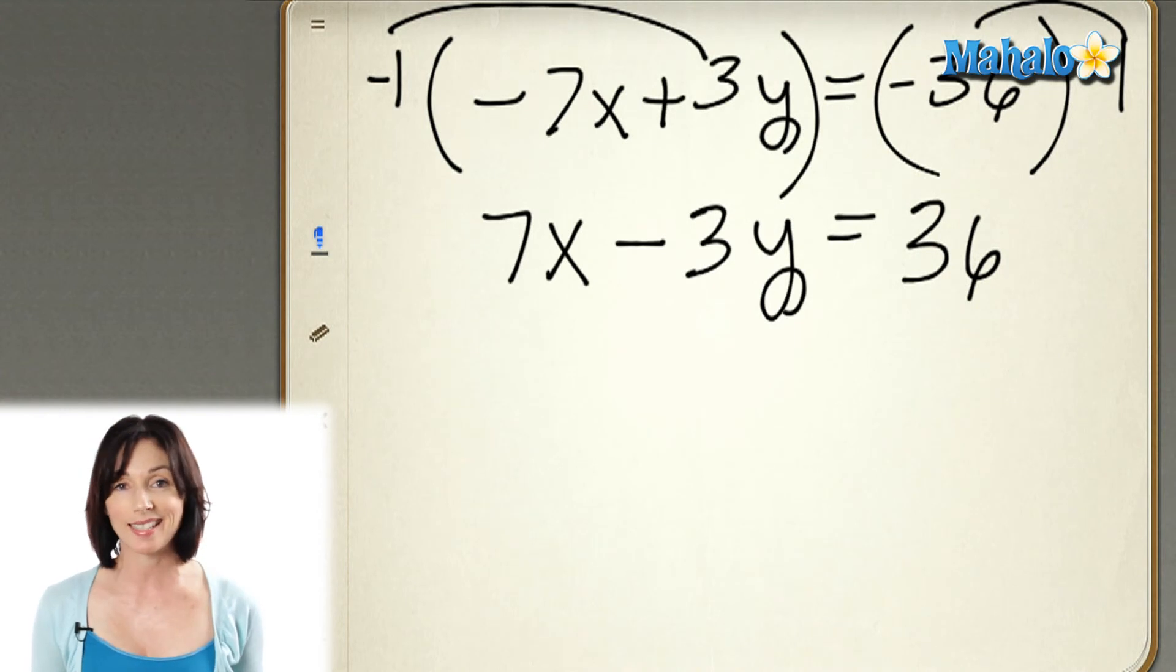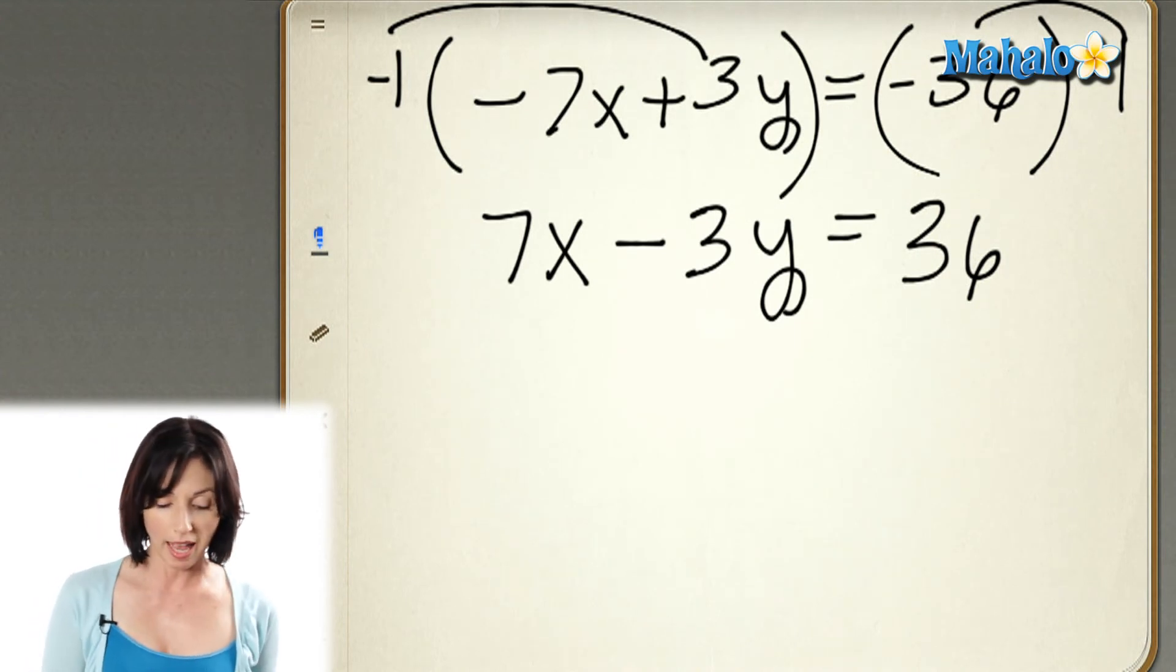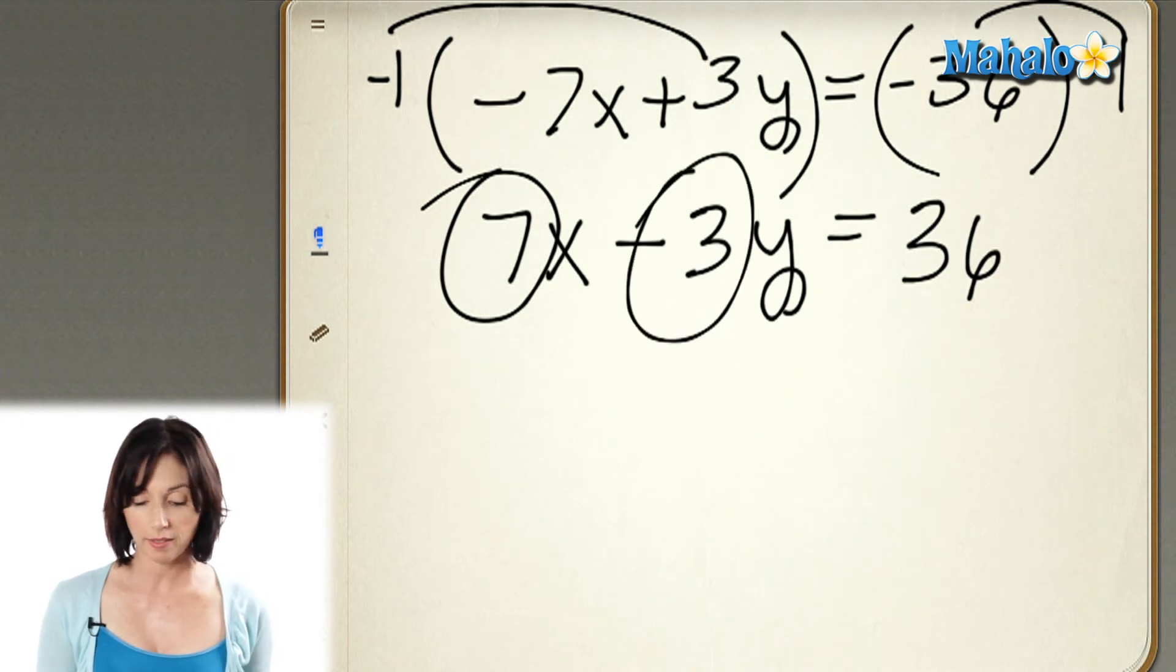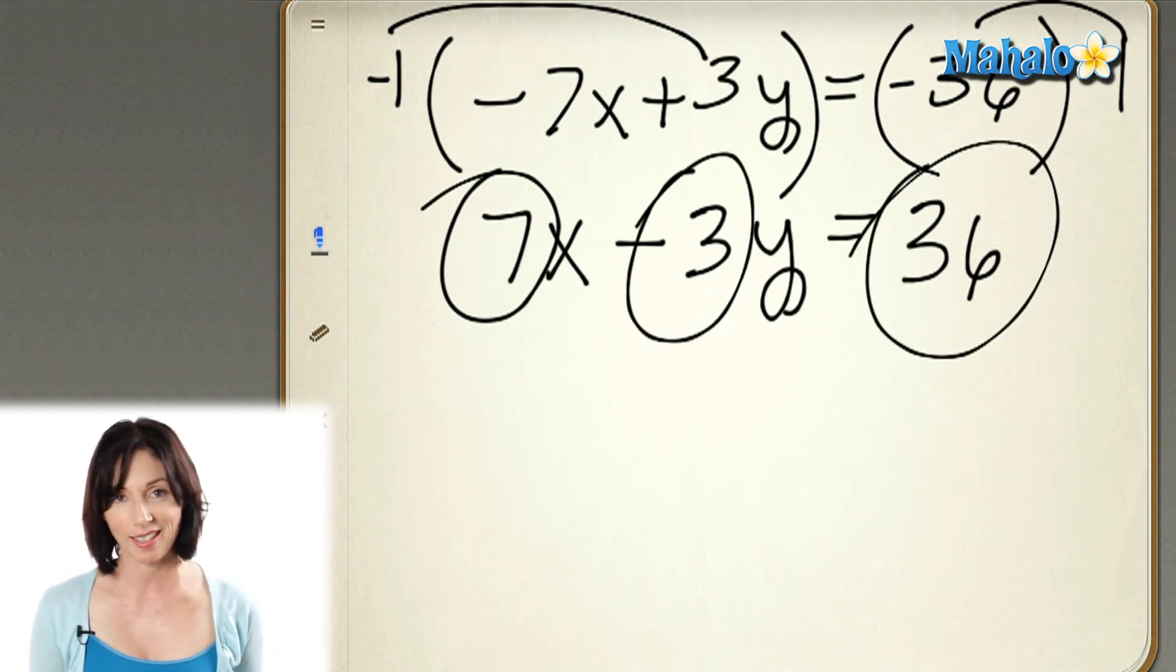Now, this equation is in standard form. We have a positive integer in front of the x, an integer in front of the y, and our constant term on the other side of the equal sign. And that's how you put the equation of a line into standard form.